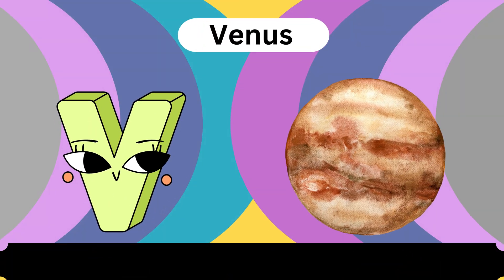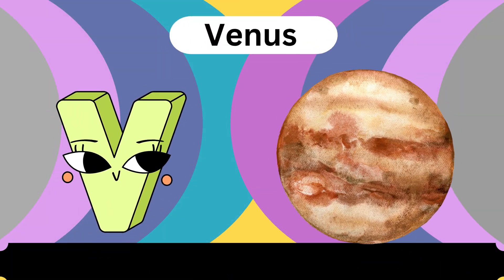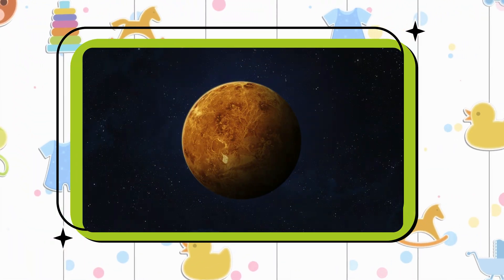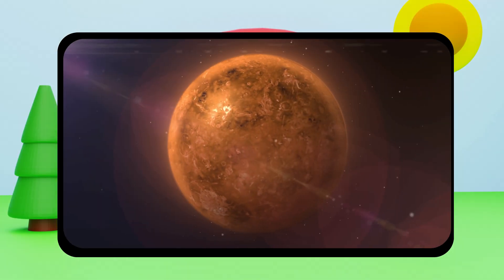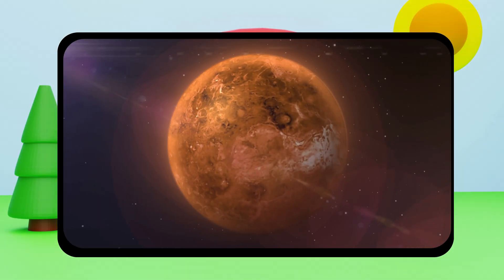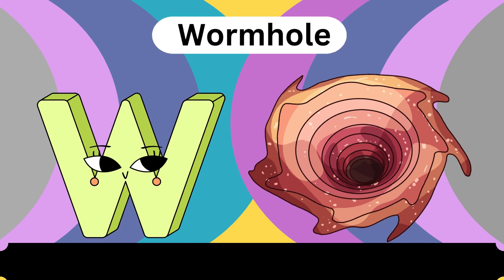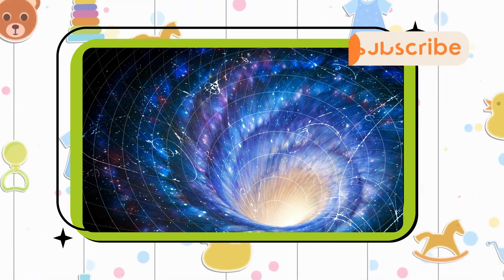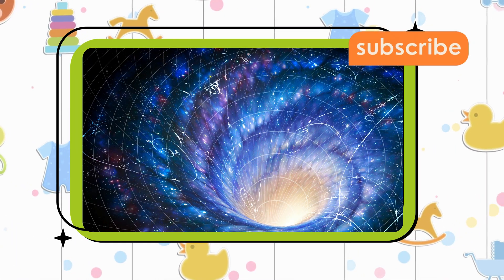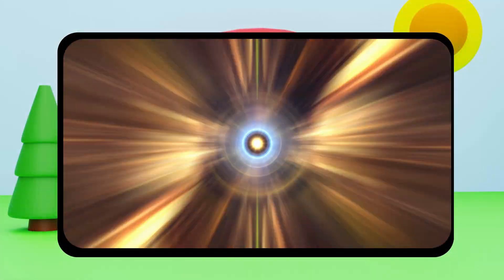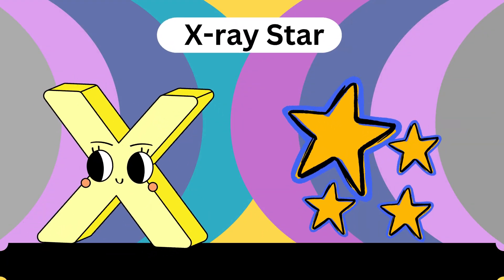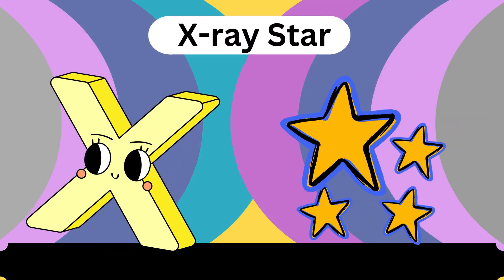Uranus. V is for Venus. Venus. Venus. Venus. W is for Wormhole. Double wormhole. Double wormhole.